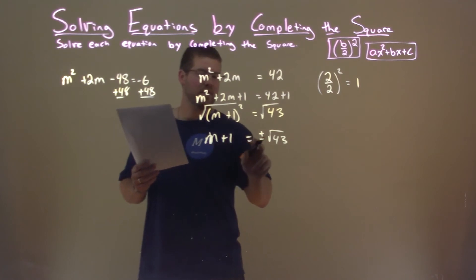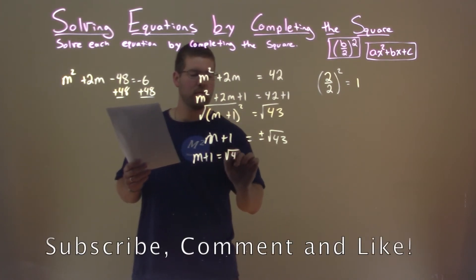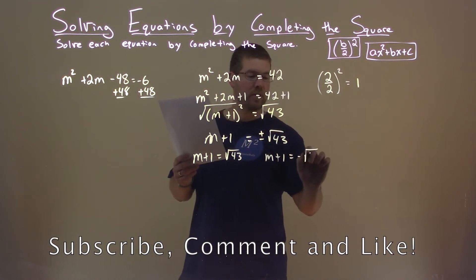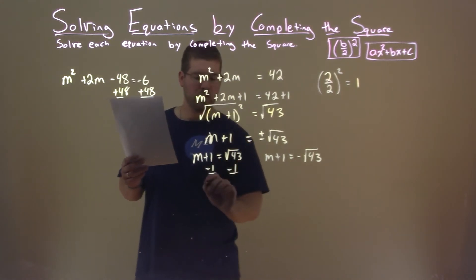We now can break this down into two parts. We have m plus 1 equals a positive square root of 43, and m plus 1 equals a negative square root of 43. We subtract 1 from both sides, and we have m equals square root of 43 minus 1.